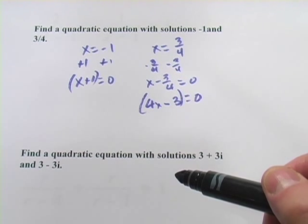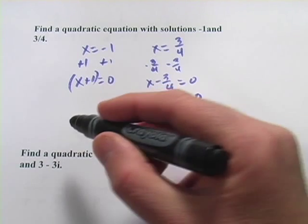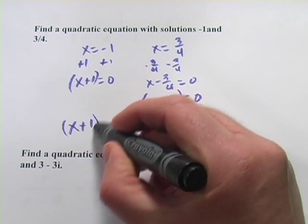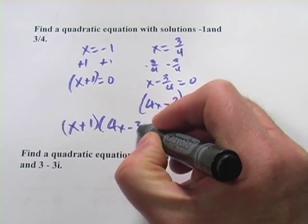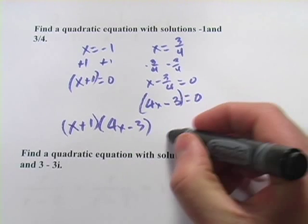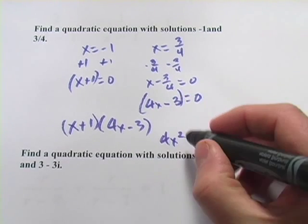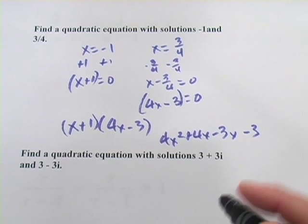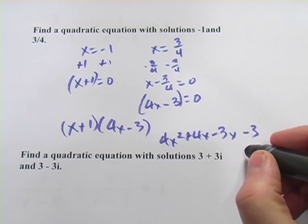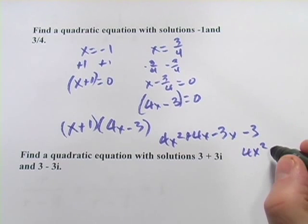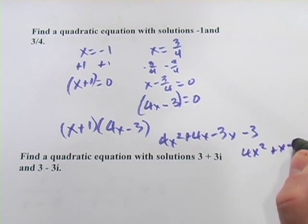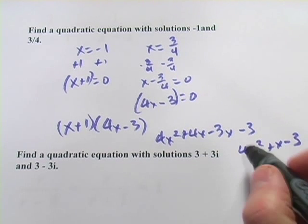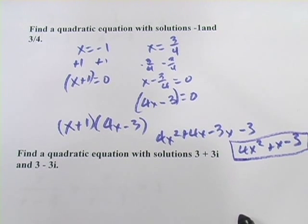We're just going to multiply those together, and we'll have our quadratic equation. So x plus 1 times 4x minus 3. That's 4x squared plus 4x minus 3x minus 3. We'll combine our like terms, and we get 4x squared plus x minus 3. And that is the quadratic equation that has solutions negative 1 and 3 fourths.